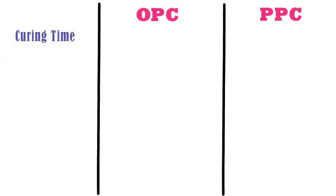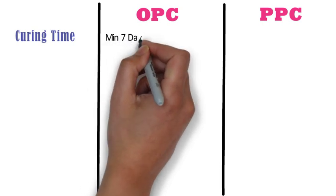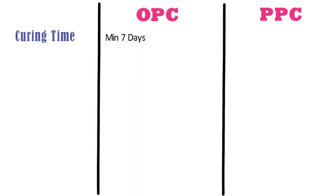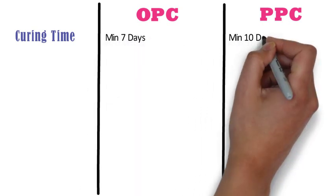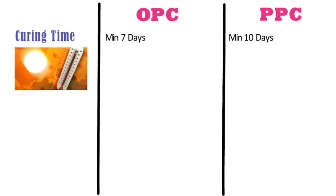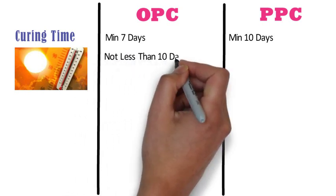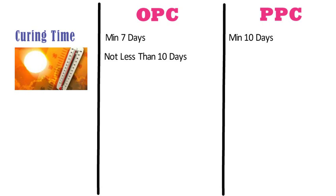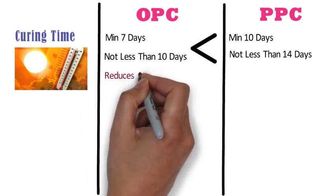Curing time. OPC requires a minimum curing period of 7 days, whereas PPC requires a minimum curing period of 10 days. When OPC is exposed to hot and dry weather conditions, the minimum curing period required shall not be less than 10 days. Whereas when PPC is exposed to hot and dry weather conditions, the minimum curing period required shall not be less than 14 days. The curing period of OPC is less than PPC, hence the curing cost is reduced.